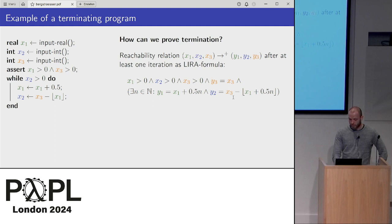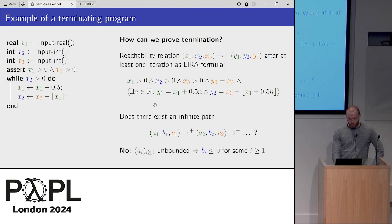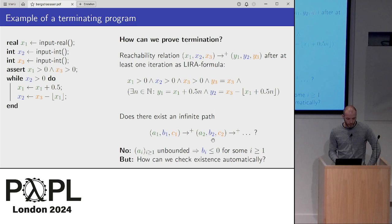And y2 is just x3 minus the floor of this expression. So this is now a formula. What we want to do is check if the program terminates. We ask: does there exist an infinite path defined in this formula, for valuations a1, b1, c1 for the x's? In this example this is not the case, because the a_i's — the valuations of x1 — would grow unboundedly, which means the b_i's go below 0 at some point. The setting I want to talk about is how we can automatically check if, in such a given formula, we have such an infinite path.